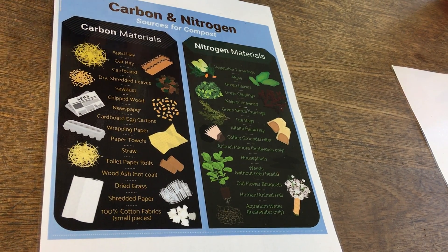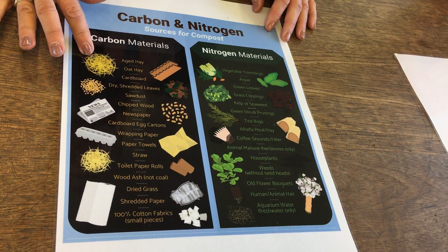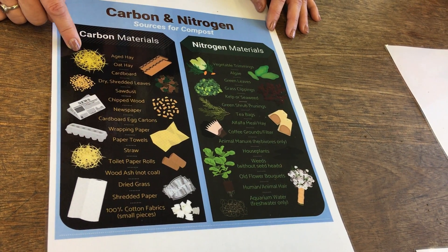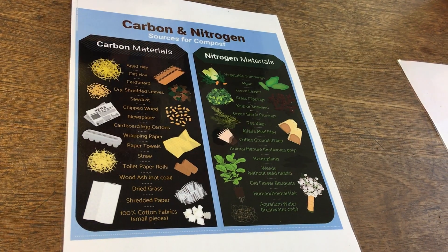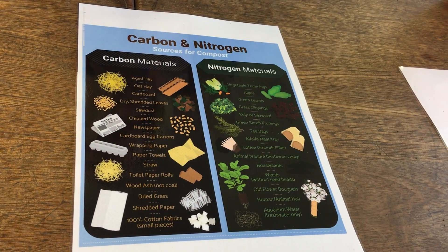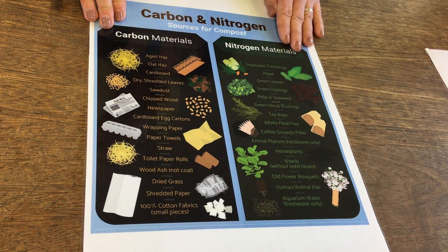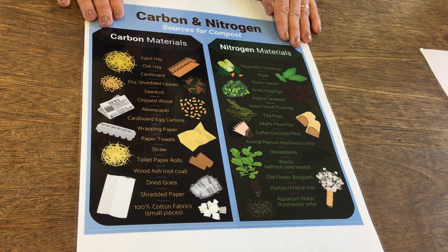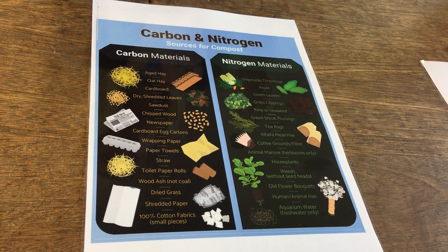For example, straw has a carbon-nitrogen ratio of about 200 to 1, whereas grass is about 10 to 1. A mixture of straw and grass might give something like 100 to 1, getting more towards the ideal. This is why we need to mix our browns and greens, aiming for that 30 to 1 ratio. By volume, we want equal proportions of the two categories to achieve a good carbon-nitrogen mix.